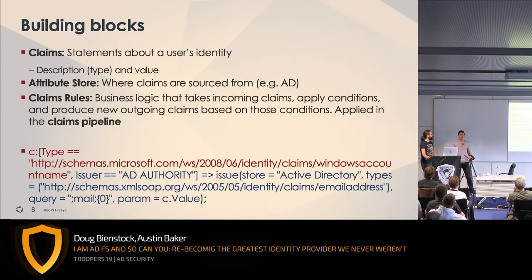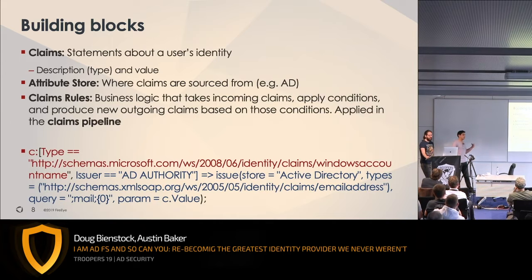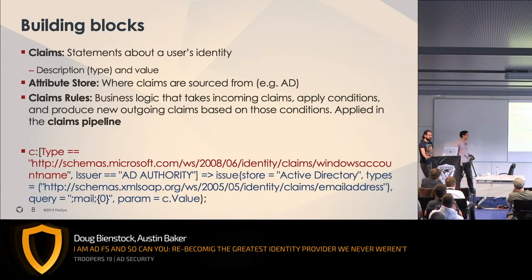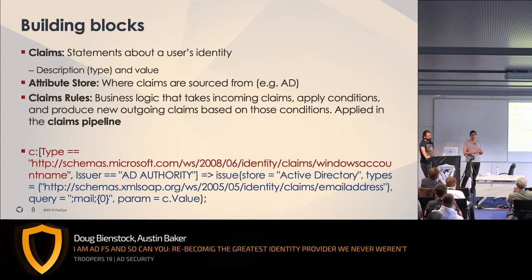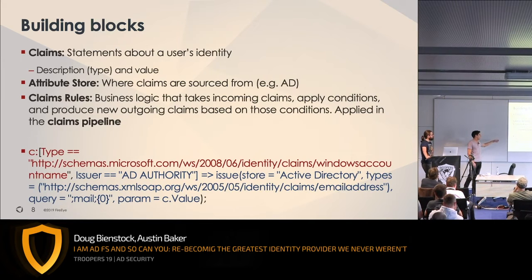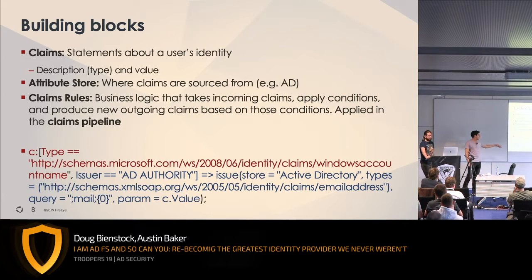The building blocks of ADFS are claims. Claims are the currency in Active Directory Federated Services — just statements about a user, like a user's account name or email address. These claims come from an attribute store, which in 99% of cases is just Active Directory. Claims are operated on with rules — business logic that can take a claim, apply some condition, and output a new claim. We have an example claim here: our condition looks for a Windows account name, then we query Active Directory for the user's mail attribute and issue it as a claim of the type email address.